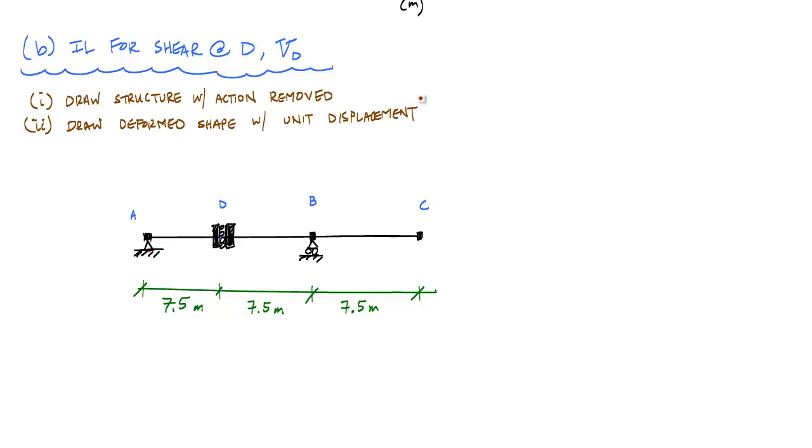And here is where the internal sign convention that you're using is important. What I typically use is that the internal shear forces at a cut are downwards on the left side of the cut and upwards on the right side of the cut. So this is my positive internal shear sign convention. So that means in terms of unit displacement, I'm going to have the left side of this go downwards and the right side go upwards. And I'm going to draw a deflected shape that shows that.